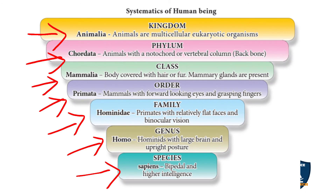We are animals, so the Kingdom is Animalia. Phylum Chordata means having a backbone. Class Mammalia means the body is covered with hair and mammary glands are present. Order Primata means having forward-facing eyes and fingers capable of grasping objects.